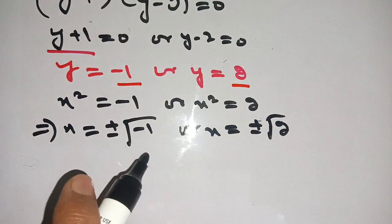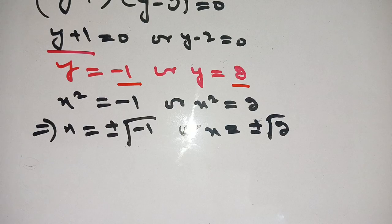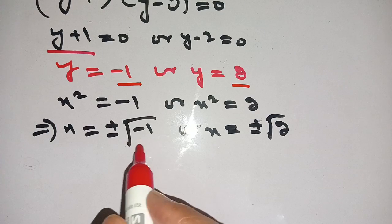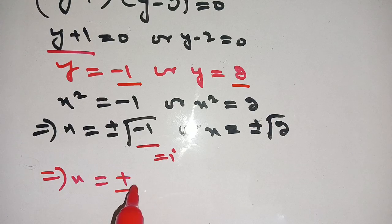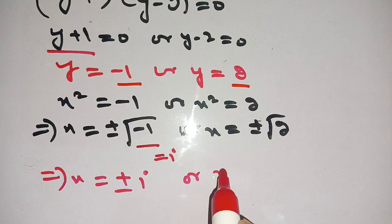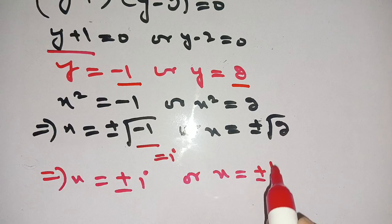Now, we know that square root of minus 1 is equal to iota. Thus, x is equal to plus minus iota, or x is equal to plus minus square root of 2.